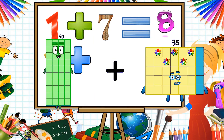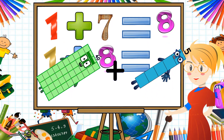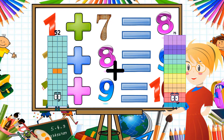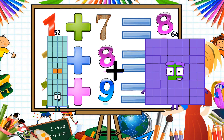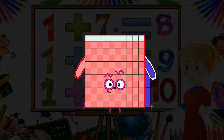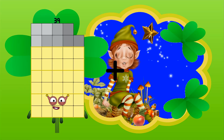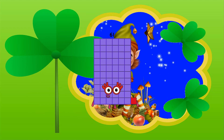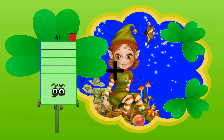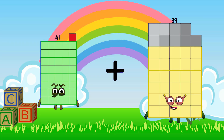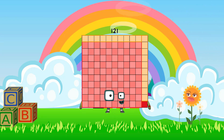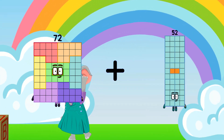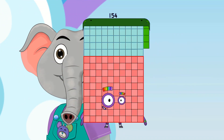40 plus 5 equals 45. 52 plus 64 equals 116. 39 plus 22 equals 61. 41 plus 80 equals 121. 72 plus 82 equals 154.